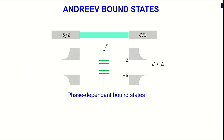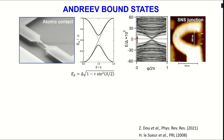We've heard a few times about Andreev states during this conference. Each time you put a coherent conductor between two superconductors and you phase-bias this structure, you have bound states for electrons within the coherent conductor, because electrons at energy below the superconducting gap cannot enter the superconducting electrodes. Those bound states have an energy which depends on the phase difference between the superconductors.